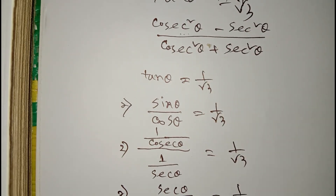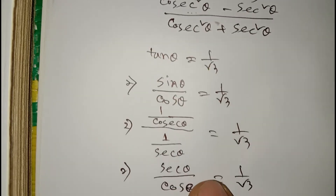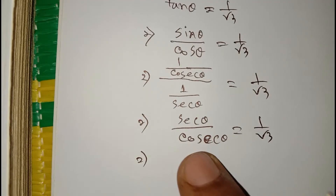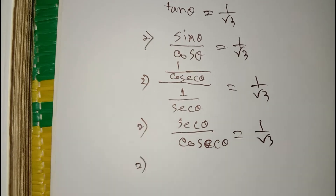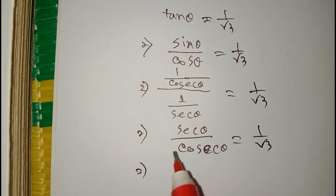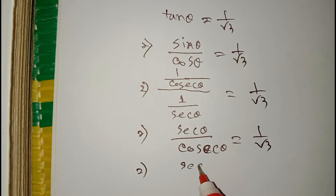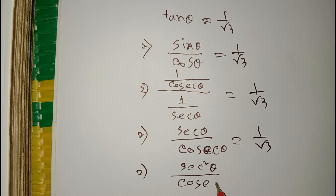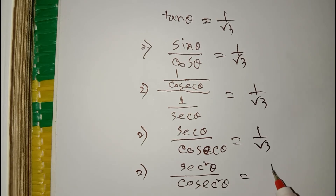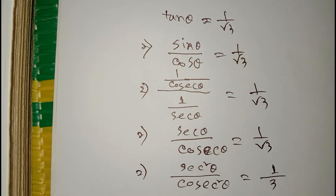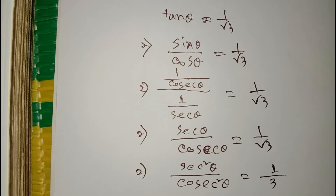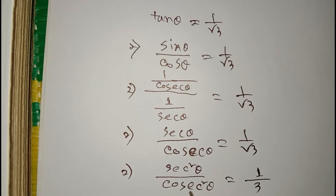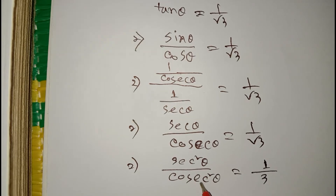We will square both sides. So it becomes sec square theta divided by cosec square theta equals 1 squared over root 3 squared, which equals 1 over 3.